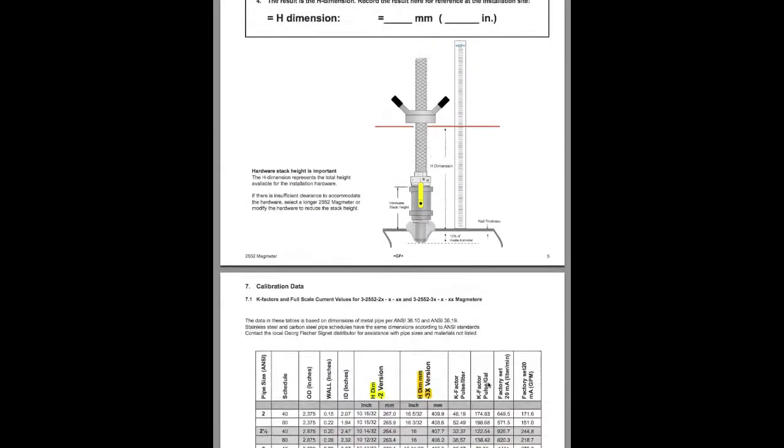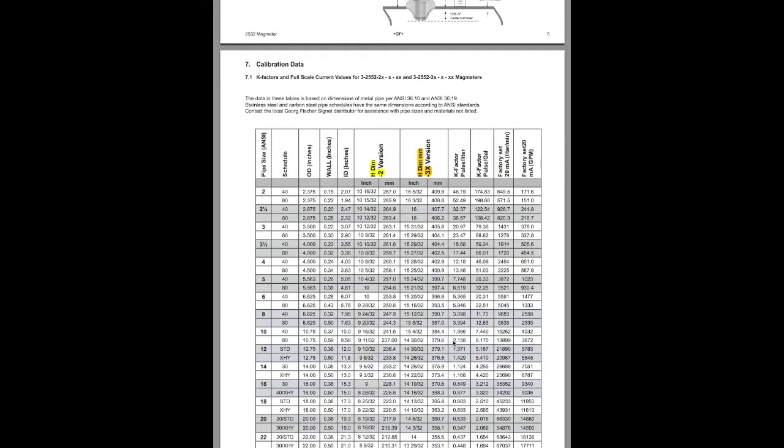Now if you have common pipe sizes and schedule, you can look at page number nine of the same manual. This is for version two. This is for version three. Your pipe size here, pipe schedule, and these are pre-calculated H dimensions.